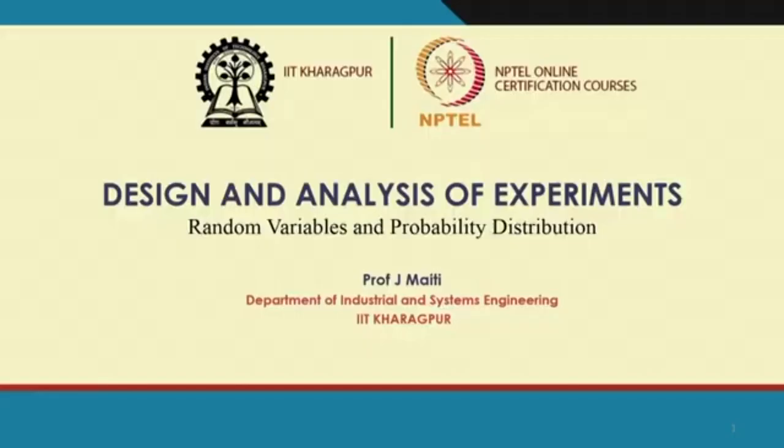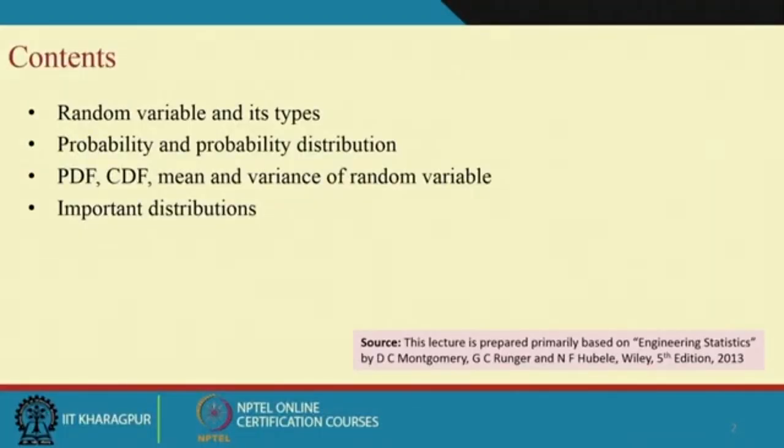Welcome to the sixth lecture of DOE. Within half an hour we will discuss random variables and probability distributions. The content of this presentation covers: random variables and their types, probability and probability distributions, probability density function, cumulative distribution function, mean and variance of a random variable, and important distributions.